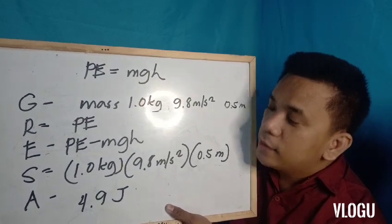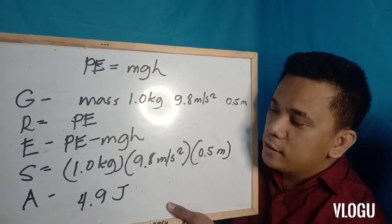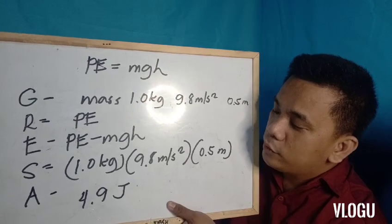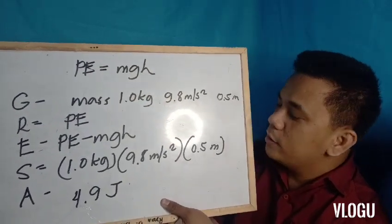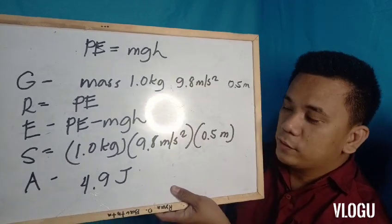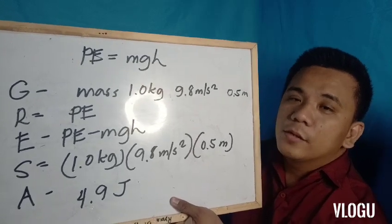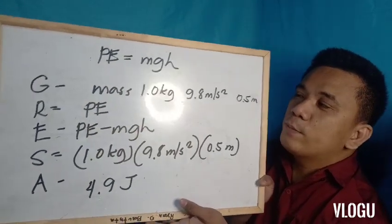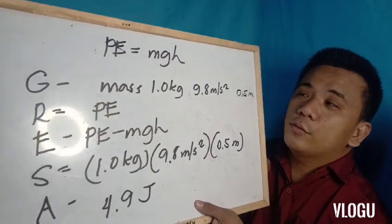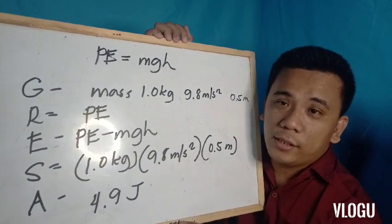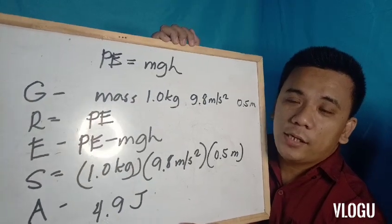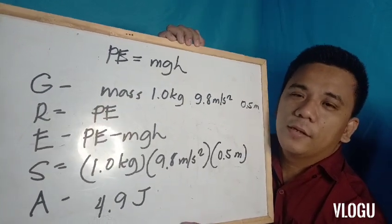The equation is: potential energy equals mass times acceleration due to gravity times height. Solution: 1.0 kilogram multiplied by 9.8 meters per second squared multiplied by 0.5 meters gives us 4.9 Joules. I hope these formulas serve as a guide on how to compute problems related to kinetic energy and potential energy.